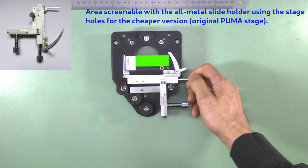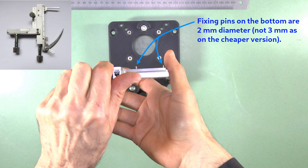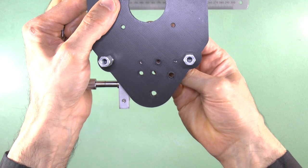It can be used with the original Puma design for the stage, but doing this brings two limitations. The first is that it restricts the full range of wire motion, so it can't fully screen the same area of a slide as the cheaper holder. And secondly, these fixing pins are two millimeters in diameter instead of the three millimeter pins used by the cheaper model, so there is some play in the fit.